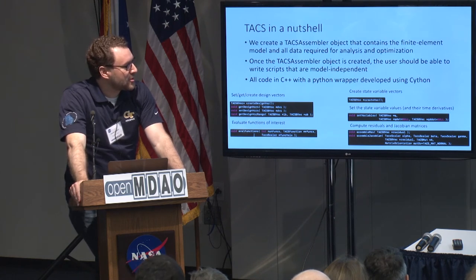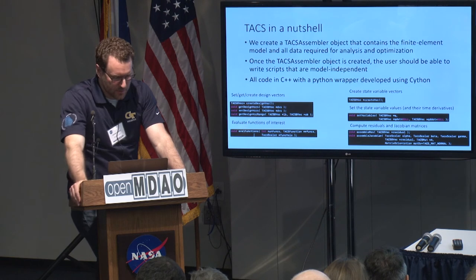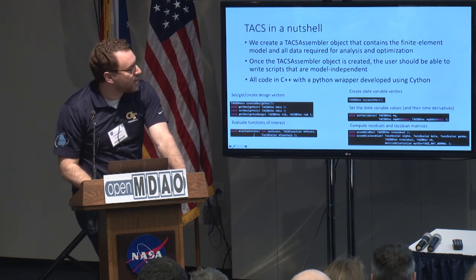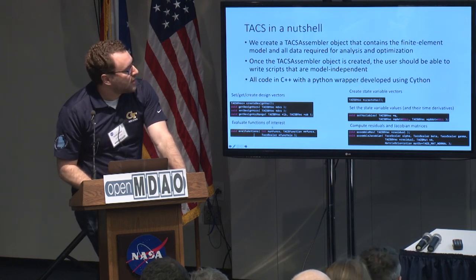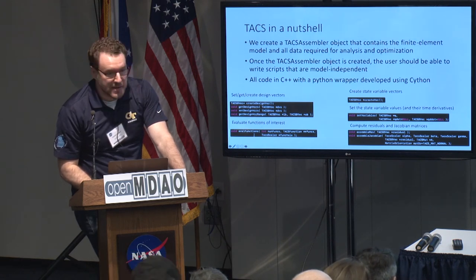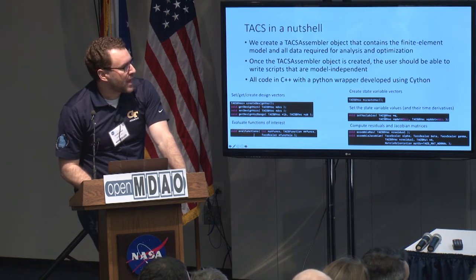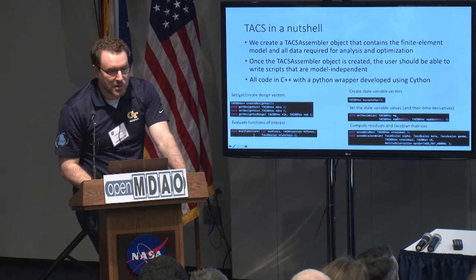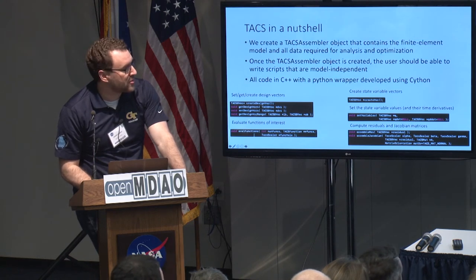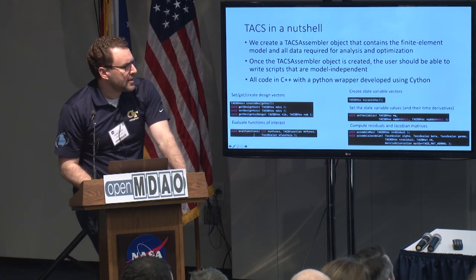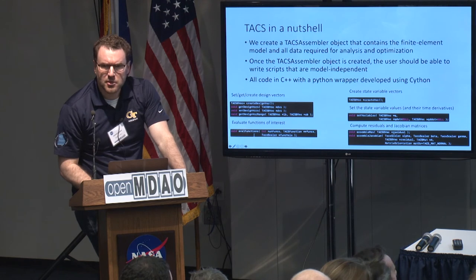Just to illustrate the high-level operations at a very high level: we have creating design vectors, evaluating functions of interest, creating a state vector, setting state variables back into the assembler object — both the state variable values themselves as well as optionally their time derivatives — and then assembling a residual and assembling Jacobians. These are all based on the TAX BVec type class, which is a block distributed vector class with optimized scatter and add-gather operations.